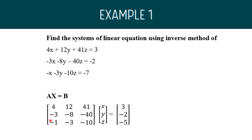The coefficient matrix A is: [4, 12, 41; negative 3, negative 8, negative 40; negative 1, negative 3, negative 10]. The variable matrix X contains variables x, y, z. The constant matrix B contains 3, negative 2, and negative 5.